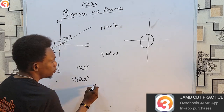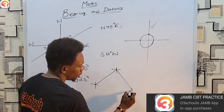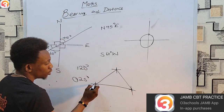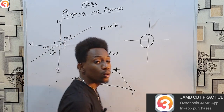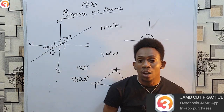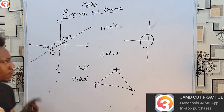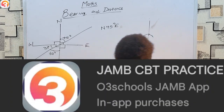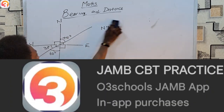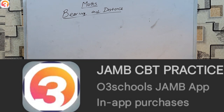So you start from one point, move on a bearing, then move on another bearing, and come back — this forms a triangle. The analysis of this triangle is done with the cosine rule and sine rule firmly in mind. So we are ready to solve questions. Get out your O3Schools Jamba app, your pens and papers — it's time for us to solve a few questions.